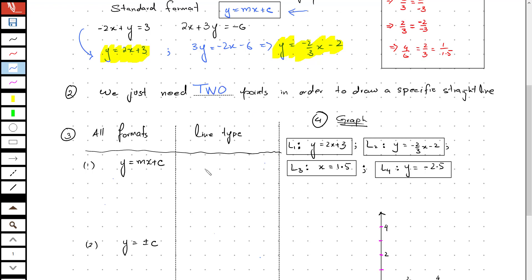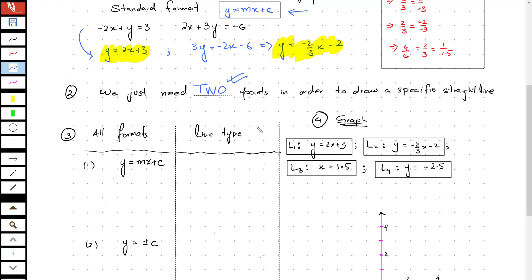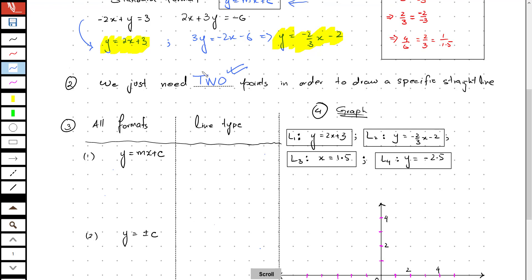For example, if we have just one point, we can draw infinitely many lines through that point. We can have more than two points as well, but a minimum of two points is more than enough in order to draw a straight line.